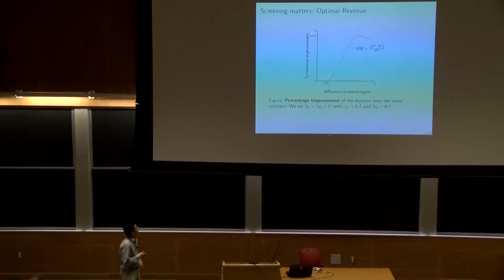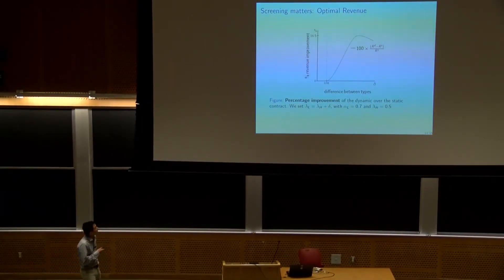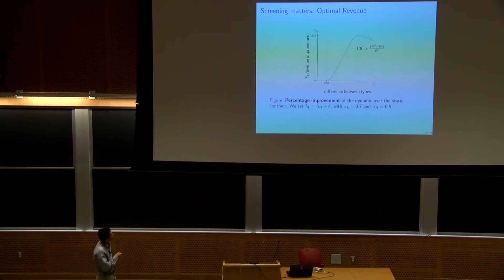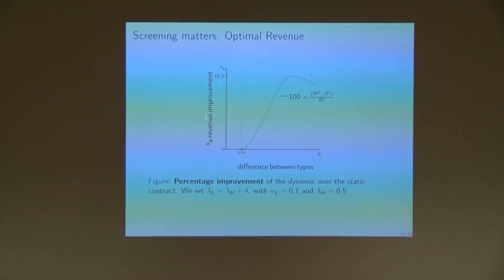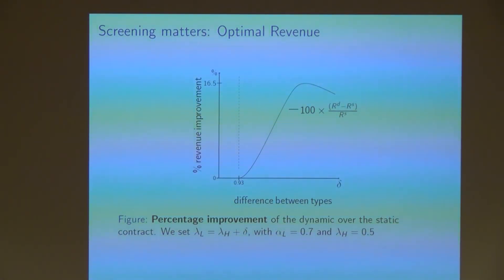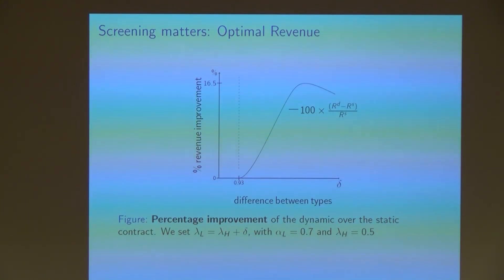Let me show a slide that demonstrates that screening matters in terms of revenue. On the horizontal axis I am plotting the difference between the types — the farther right, the more different the types. On the vertical axis I am plotting the percentage revenue improvement of the dynamic contract over the static contract. When the types are different, there is a huge revenue improvement from using a dynamic contract instead of a static contract. This shows a non-trivial improvement obtained when using a dynamic contract.